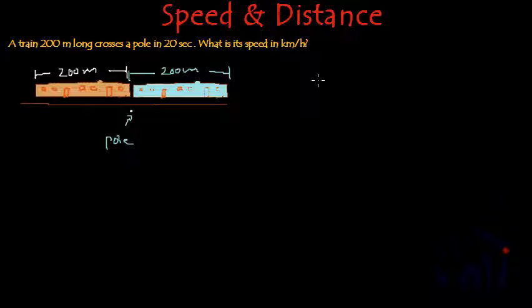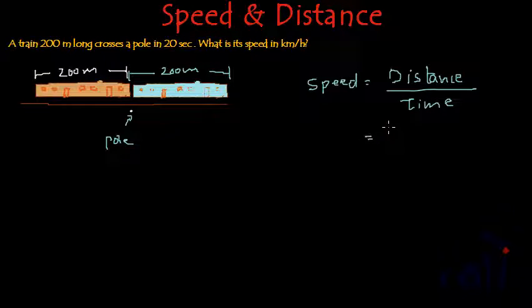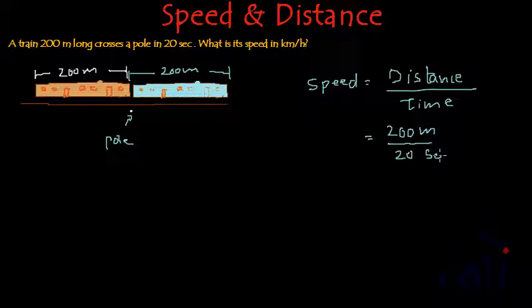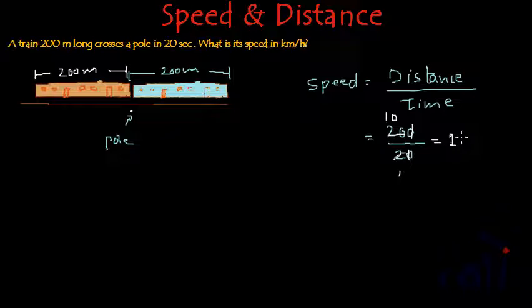So, what is the speed? Speed is distance divided by time. The distance here is 200 meters and the time is 20 seconds. The zeros cancel, giving us 10 meters per second.